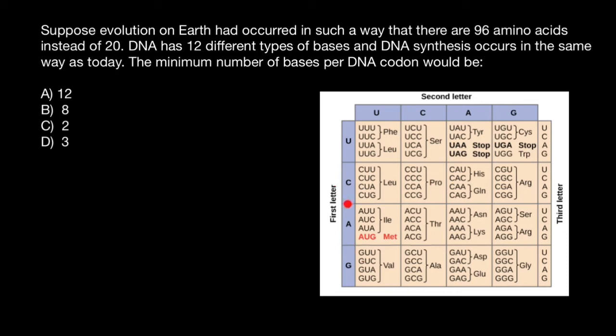And as you see, we have here 64 codons which specify 20 amino acids. Three of them specify stop codon, one specifies start codon and at the same time amino acid methionine. And that means that 61 codons specify 20 amino acids.